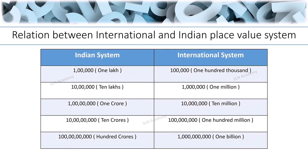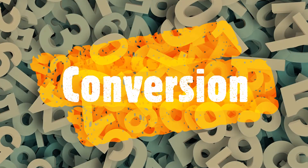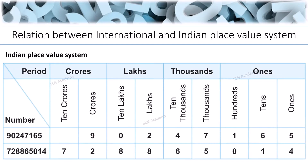This is the Indian system and international system place value chart which describes the relationship between them. Let us see how to convert numbers from one number system to another. Here we have two numbers: 90,247,165 and 728,865,014. Let us write them in the Indian system and international system place value chart.